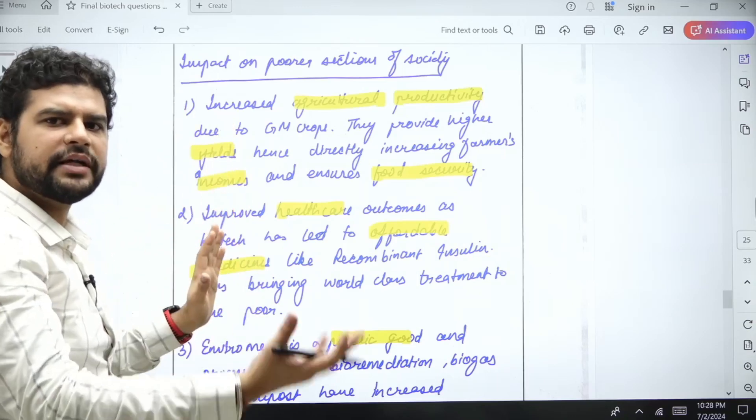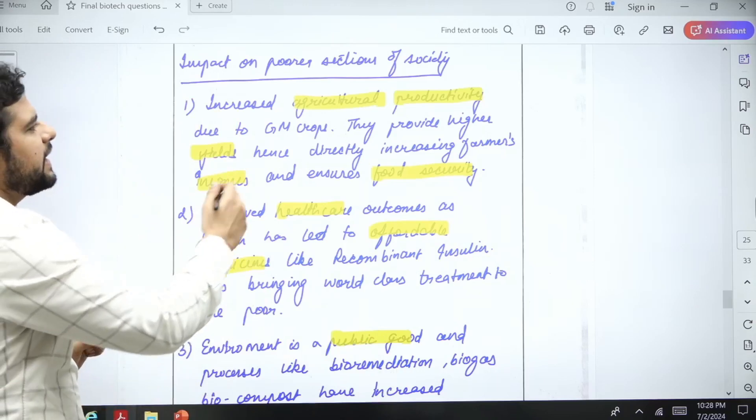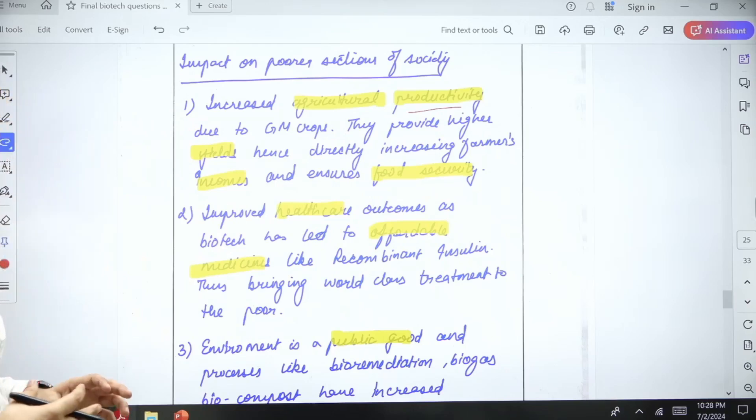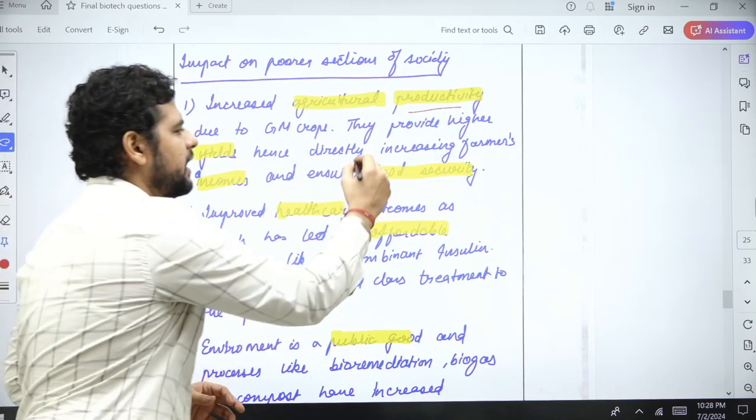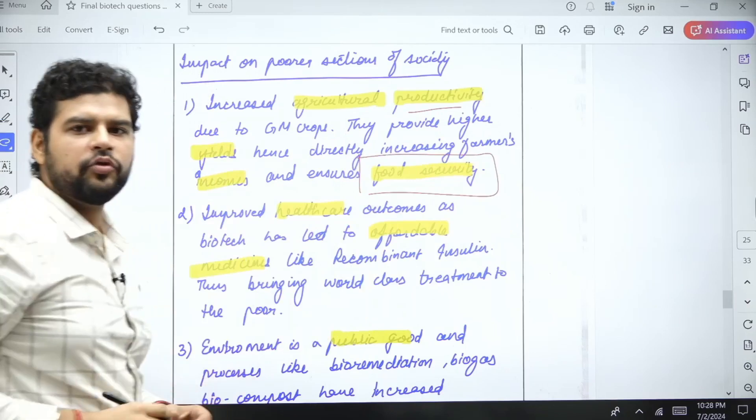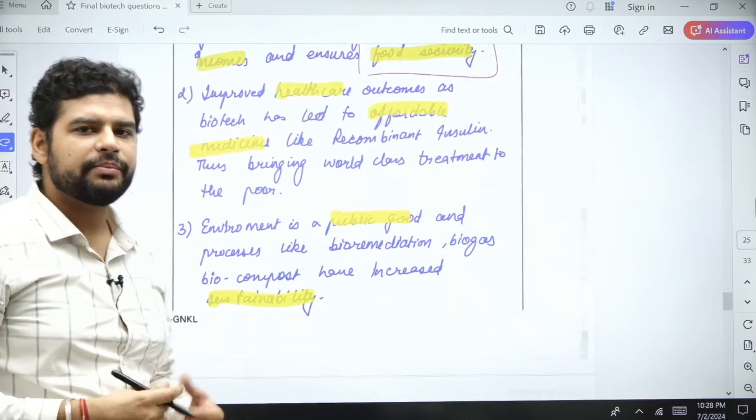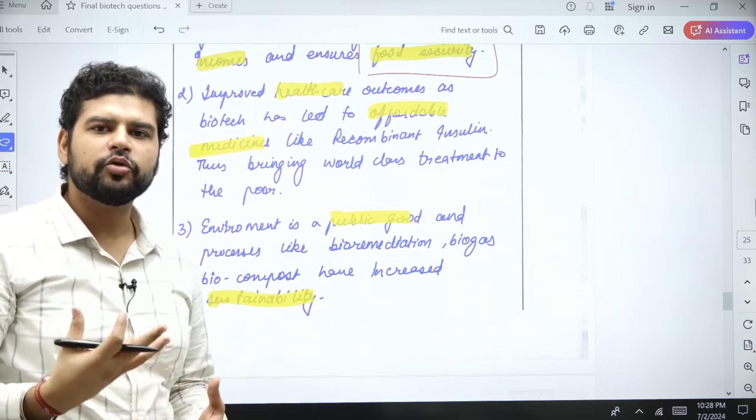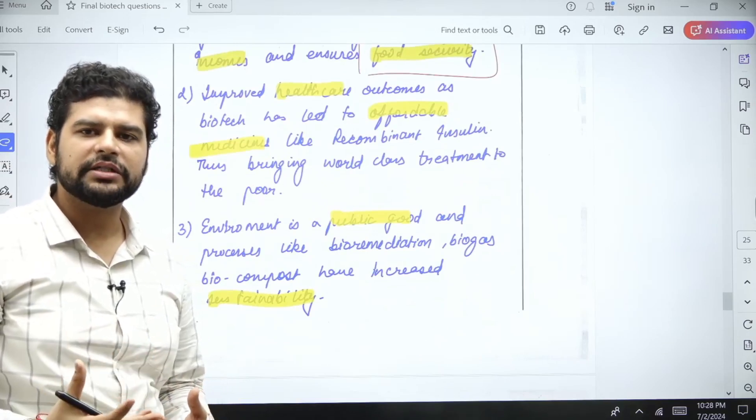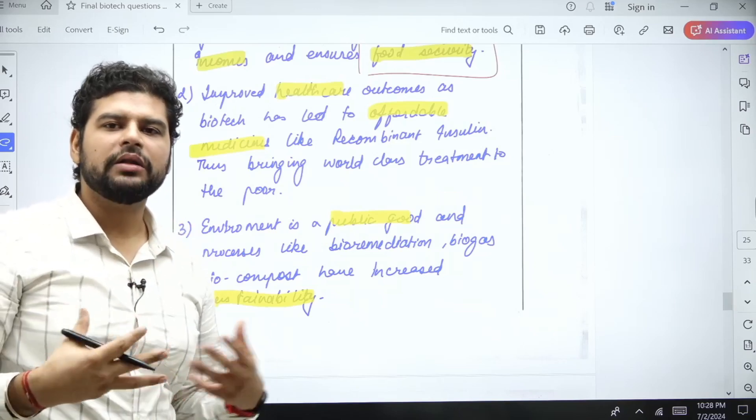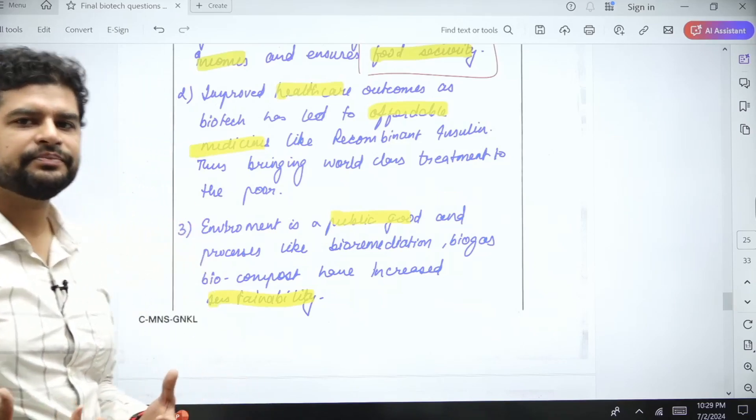How do we handle this? Of course, we tell most of the examples above. We are just going to write the implications. Increased agriculture productivity will lead to more yield and that will increase the income. One important point is food security. It will improve the healthcare outcomes of the people because people will be able to get more medicines because of biotechnology, like insulin and the TB kit I talked about.